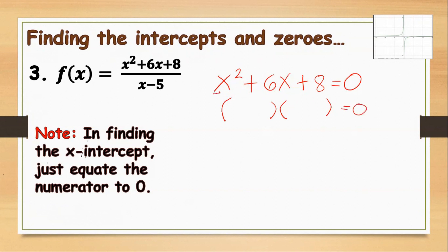We place parentheses to identify the factors of the quadratic. Focus on the first term and the last term. Our first term is x squared, so the factors are x times x. Next, we need to find the factors of 8: it can be 1 times 8 or 4 times 2. We choose the pair that when added equals 6.